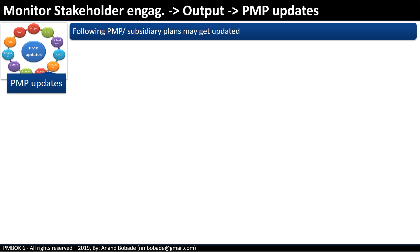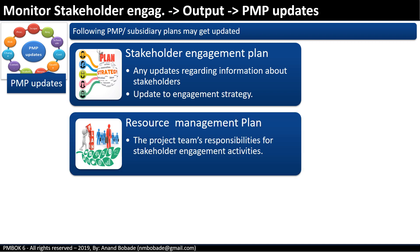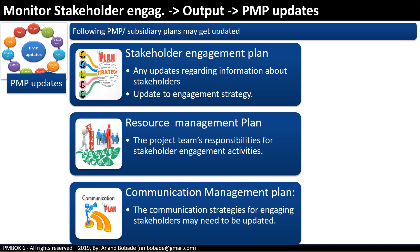The primary component of the overall project management plan update will be the stakeholder engagement plan, where updates regarding stakeholder information are added. The project team's responsibilities for stakeholder engagement activities may need to be updated in the resource management plan. The communication strategies for engaging with stakeholders may need to be updated in the communication management plan.